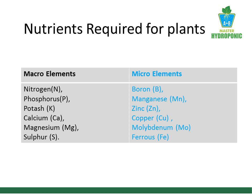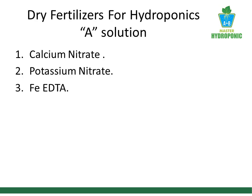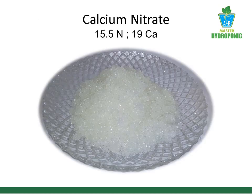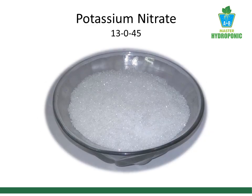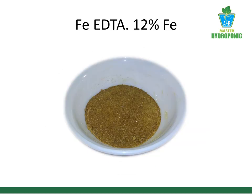In Solution A we are going to add 2 macronutrients and 1 micronutrient. The first macronutrient is calcium nitrate, which contains 15.5% nitrogen and 19% calcium. Second is potassium nitrate, which contains 13% nitrogen and 45% potash. Third is ferric EDTA, a micronutrient containing 12% iron.